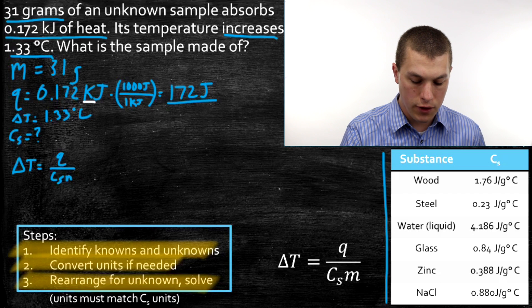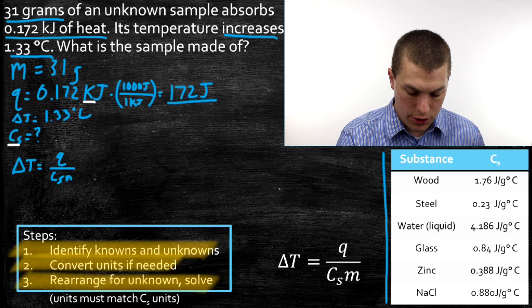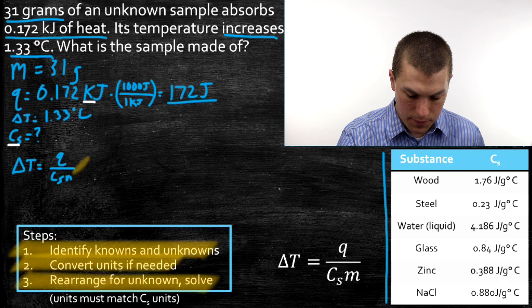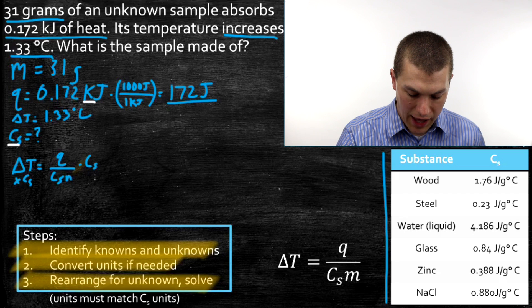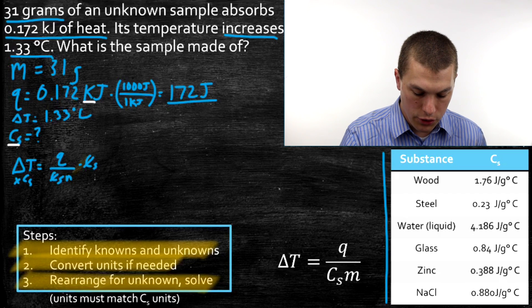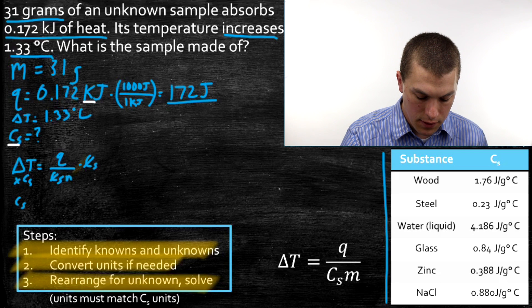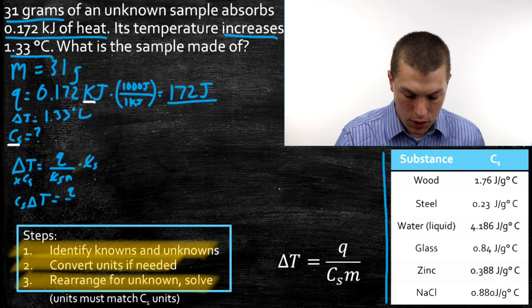And what we want to do is we want to solve for our unknown. Our unknown is Cs. So how are we going to get Cs over there? Well, the first thing we're going to do is we're just going to multiply both sides by Cs. And when we do that, our Cs on the right hand side is going to cancel out. And our new equation is going to be Cs times delta T equals Q over m.